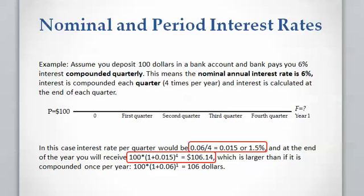So the interest will be compounded 4 times per year at the rate of 1.5% per quarter. Then at the end of the year, you will receive $100 multiplied by (1 + 0.015)^4, which equals $106.14. As you can see, if the bank considers an interest rate compounded quarterly, it will give you slightly higher interest compared to the case where interest rate was compounded annually.